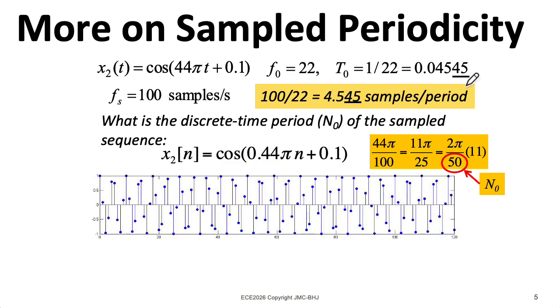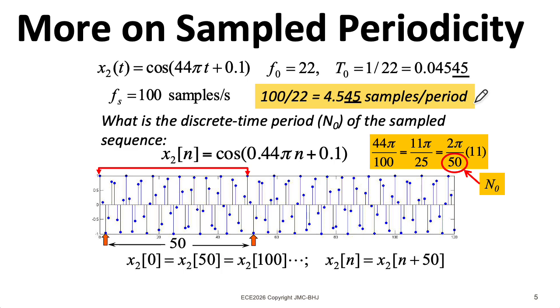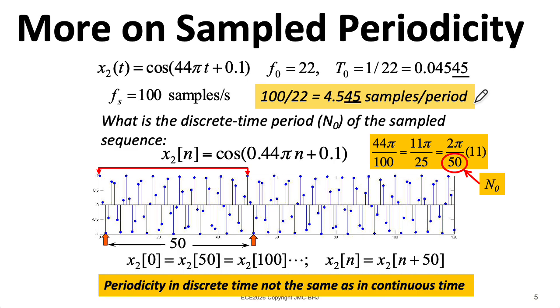So the sequence is periodic, but it has a period of 50 samples. So our sense of periodicity in the discrete time domain, if we have it, doesn't necessarily correspond to our sense of periodicity in the continuous time domain. But you need not fret.